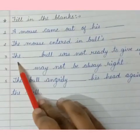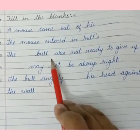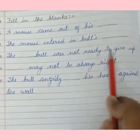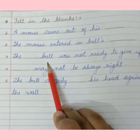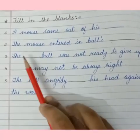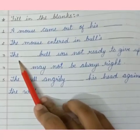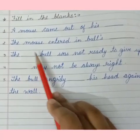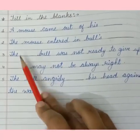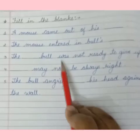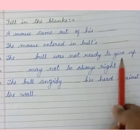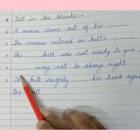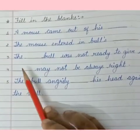Now come to the third fill-in: The blank bull was not ready to give up. The bull was in great anger — so we write 'angry.' The angry bull was not ready to give up.